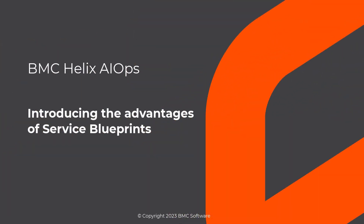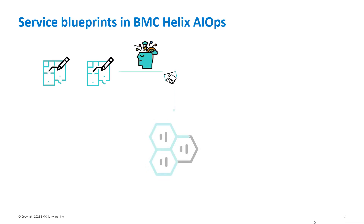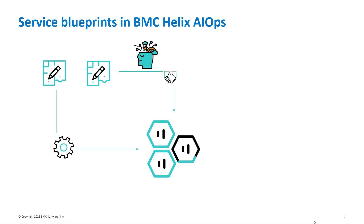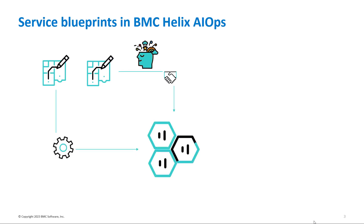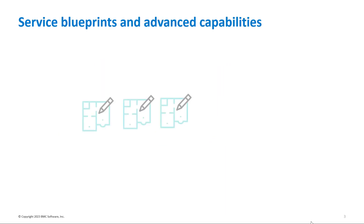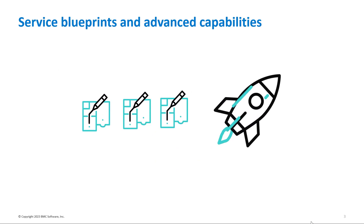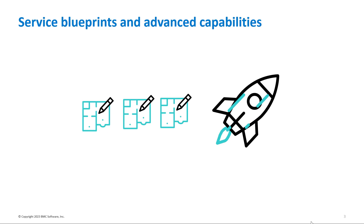Hello. In this video, get introduced to the advantages of using blueprints to create service models in BMC Helix AIOps. Service blueprints help service designers build large and dynamic business service models by using a set of predefined configurations. Each configuration contains rules to identify the start node and a traversal map to identify the related nodes of a service. Let's look closer at the service blueprints feature and its advanced capabilities offered by BMC Helix AIOps.